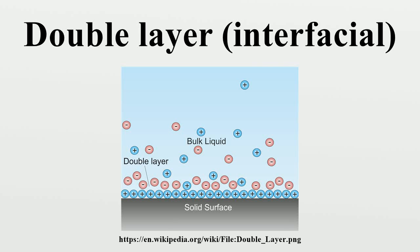A double layer is a structure that appears on the surface of an object when it is exposed to a fluid. The object might be a solid particle, a gas bubble, a liquid droplet, or a porous body. The DL refers to two parallel layers of charge surrounding the object.